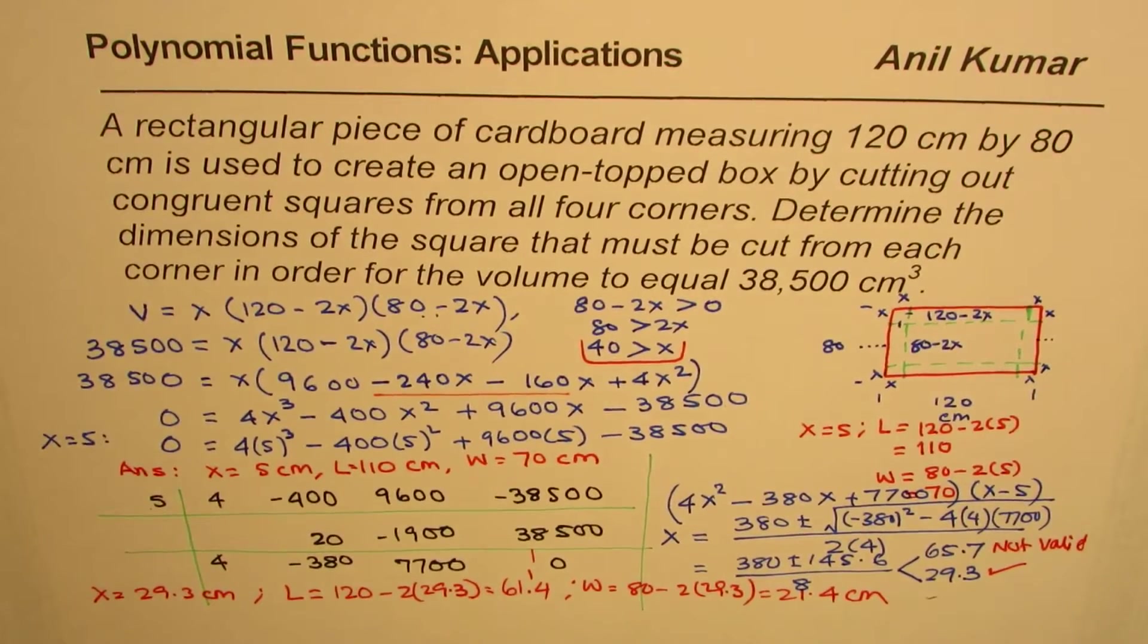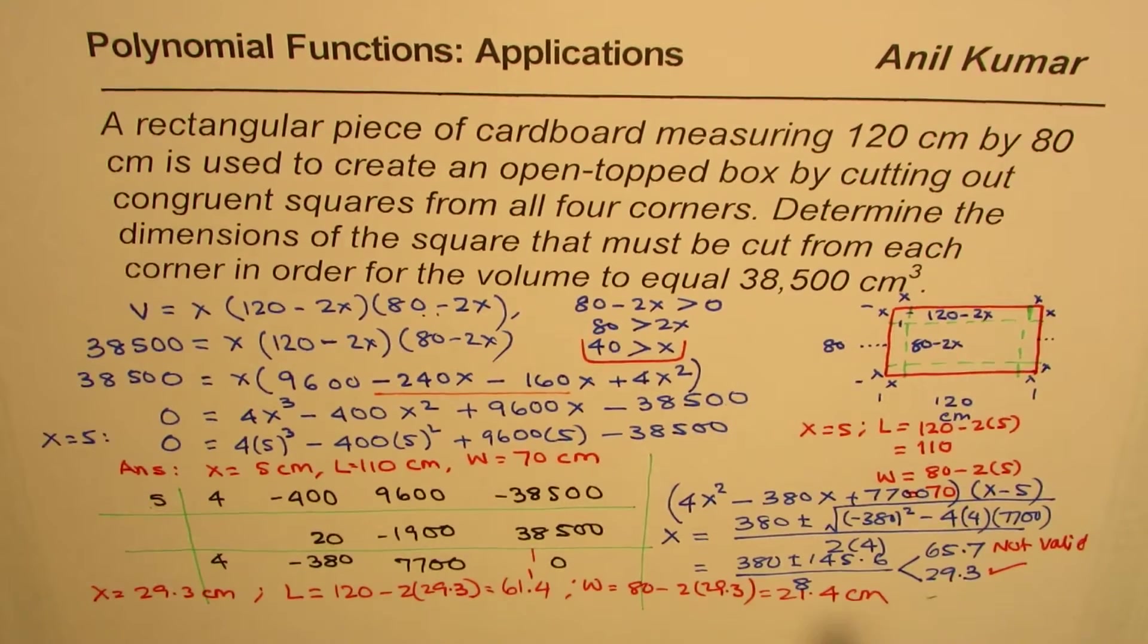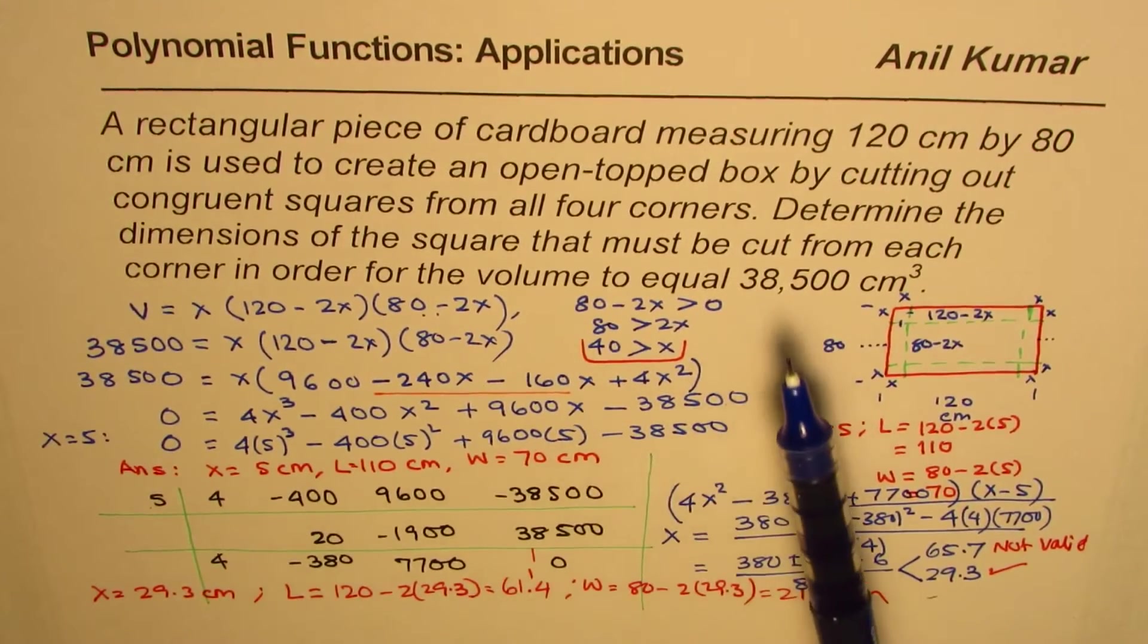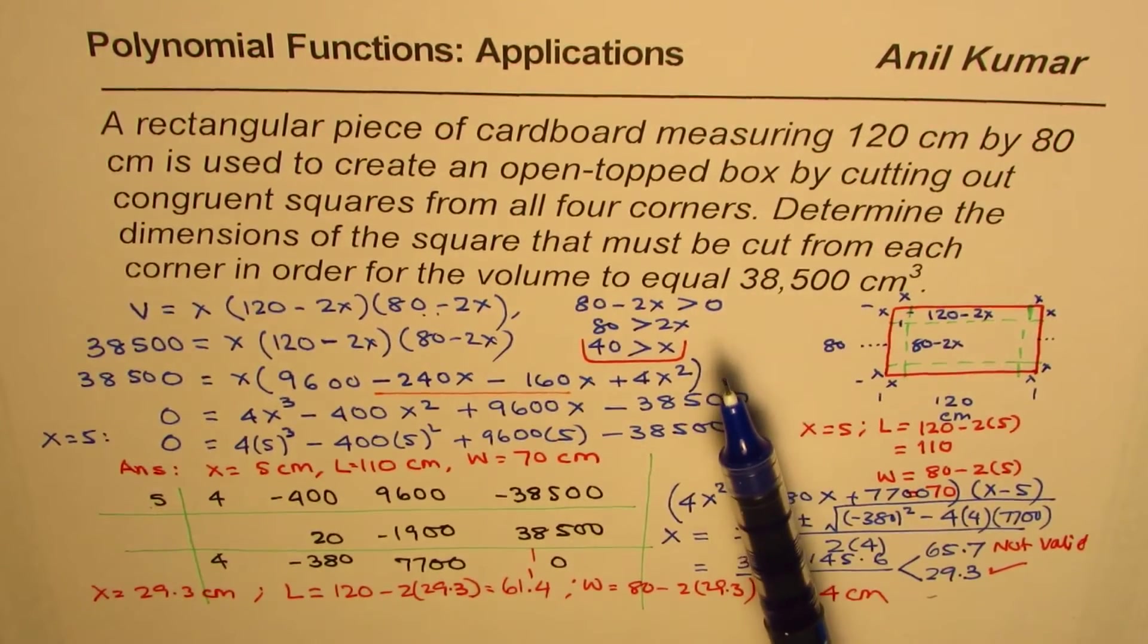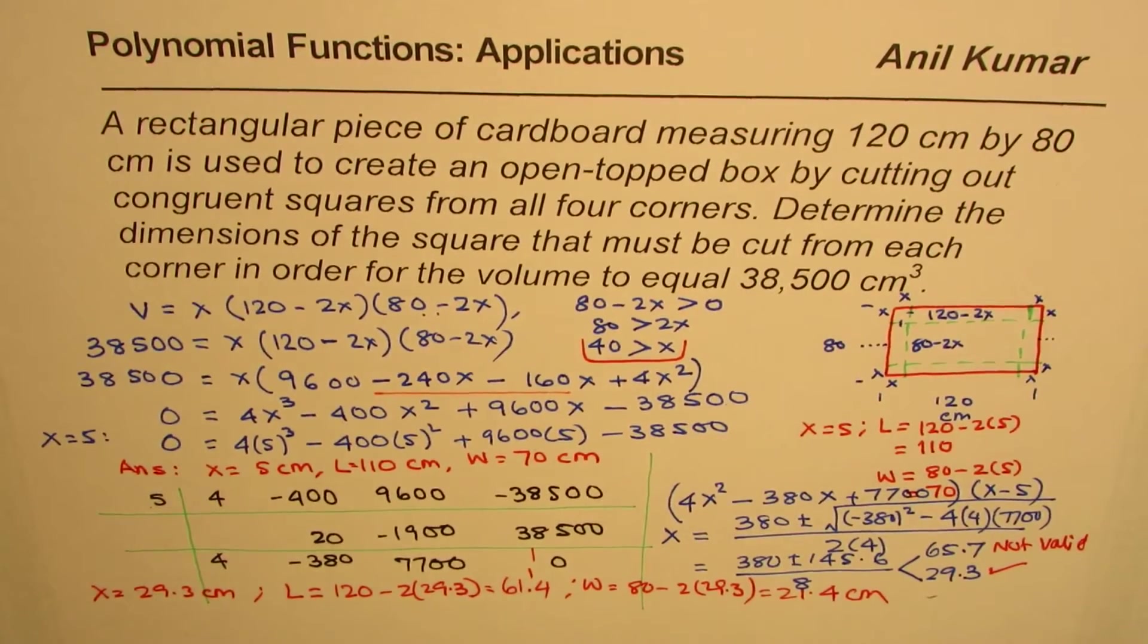Now, here is an additional question for you. Now, for the value of X as 5 and 29.3, we get a volume of 38,500. You need to find the value of X which will give us higher volume than 38,500, and provide reason for the same. I hope that should be interesting for you.